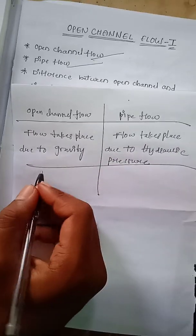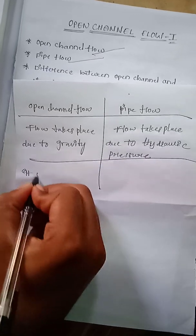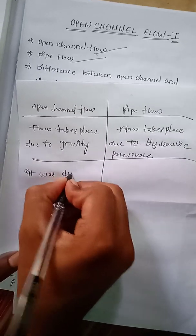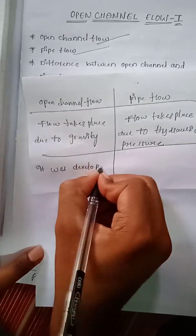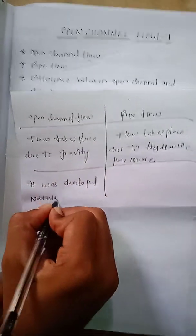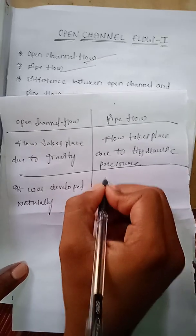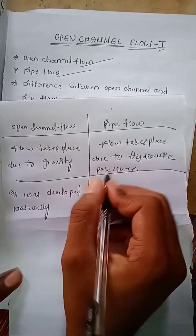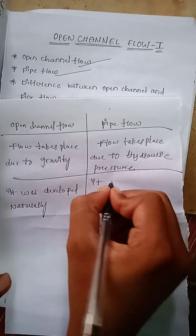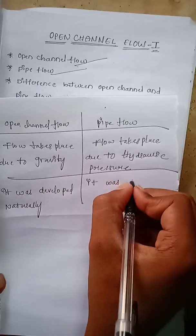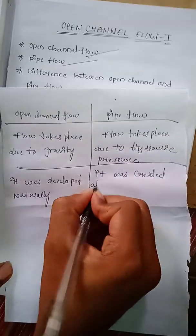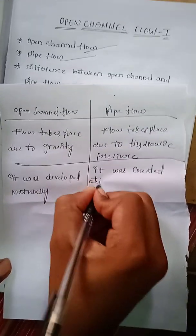The second difference: open channel flow is developed naturally, whereas pipe flow is created artificially.